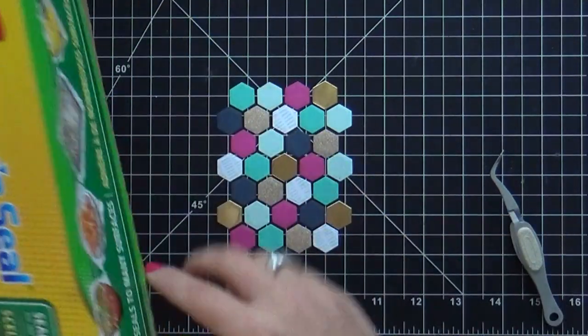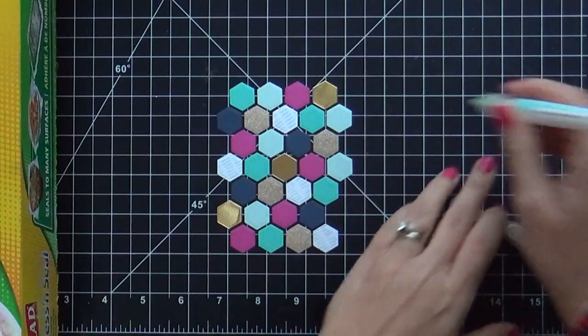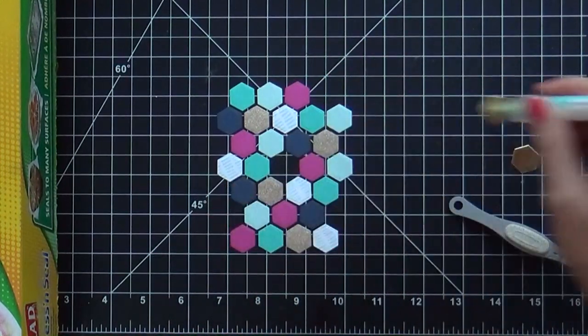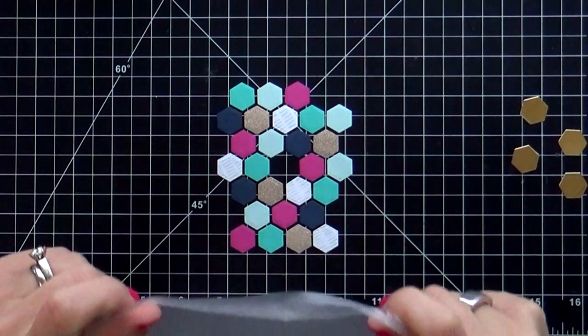So once I get these all lined, I'm going to pull out the press and seal. Before I adhere the press and seal on though, I'm going to just remove the gold foil ones because I've tried this a couple times now. This is not my first time.